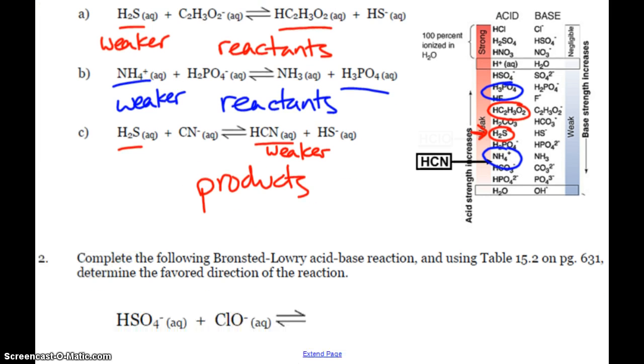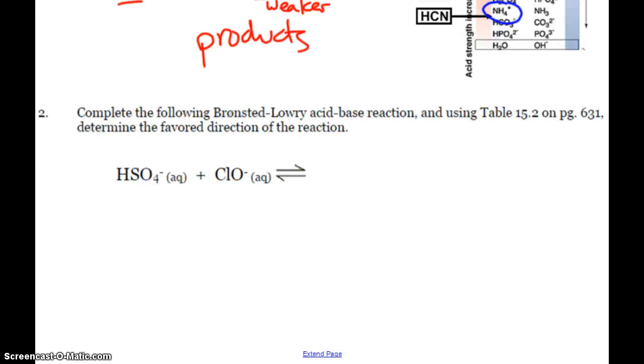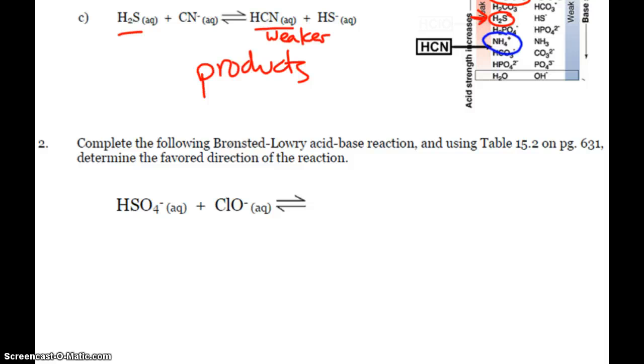And so, for that next question, first, complete the acid-base reaction. So I've got HSO4 and ClO. Obviously, the HSO4 is going to donate its hydrogen. There's the only hydrogen there, so there's only one choice. So we'll make HClO.